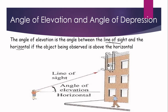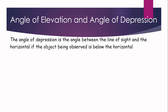When does angle of elevation occur? It occurs when the object being observed is above the observer. On the other hand, the angle of depression is the angle between the line of sight and the horizontal if the object being observed is below the horizontal.